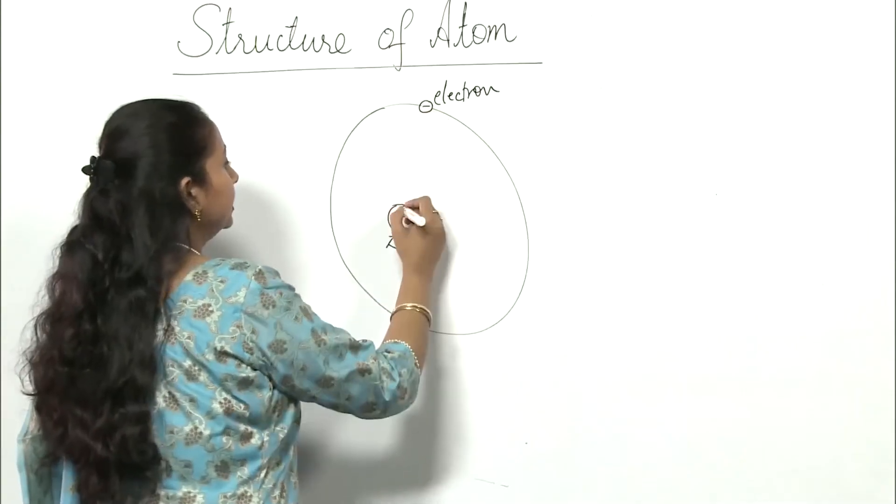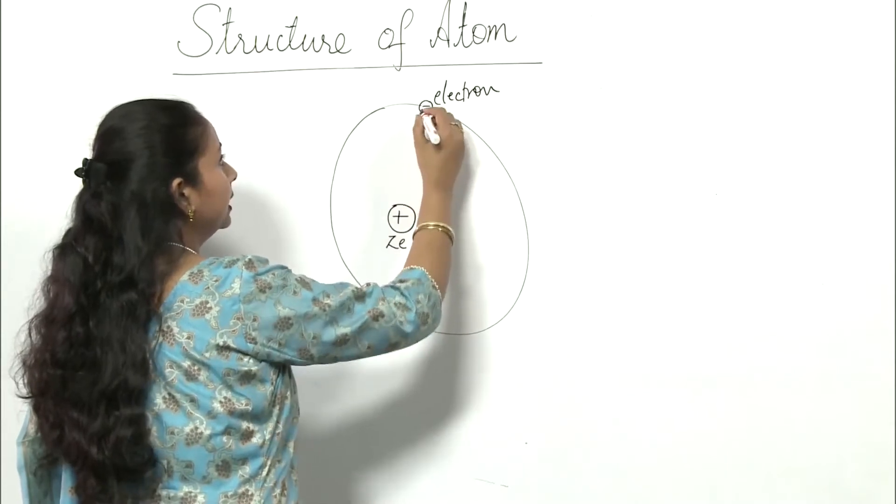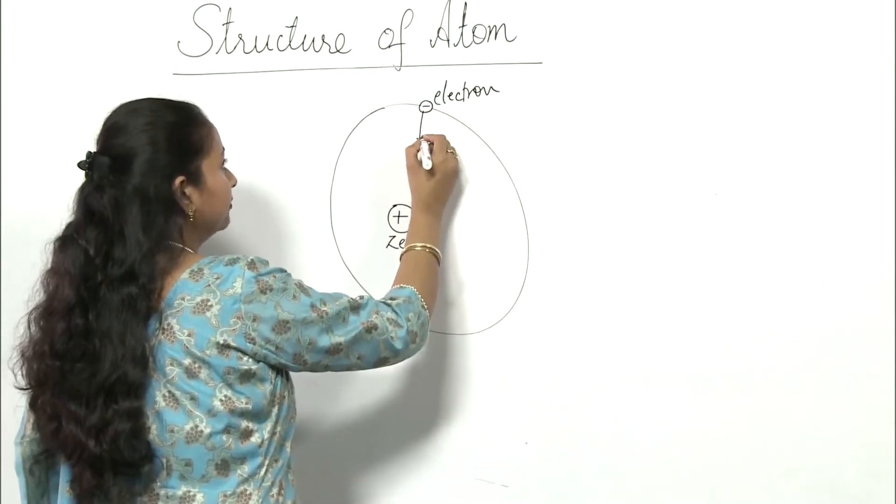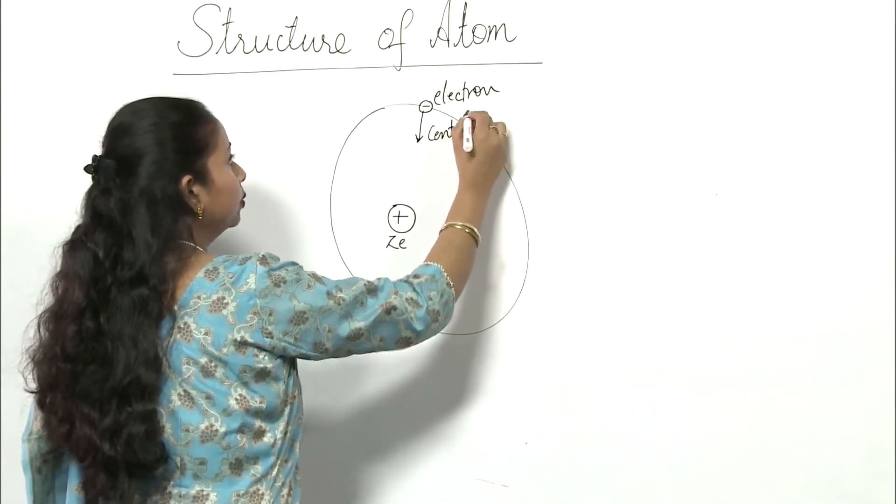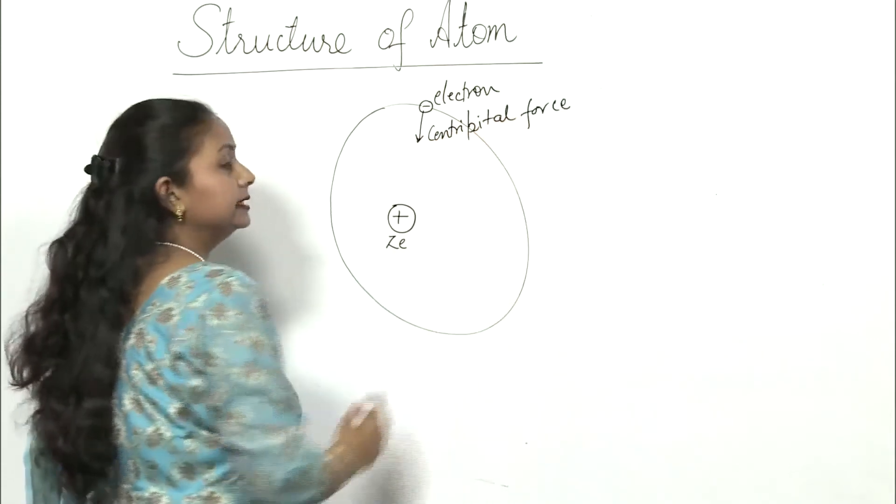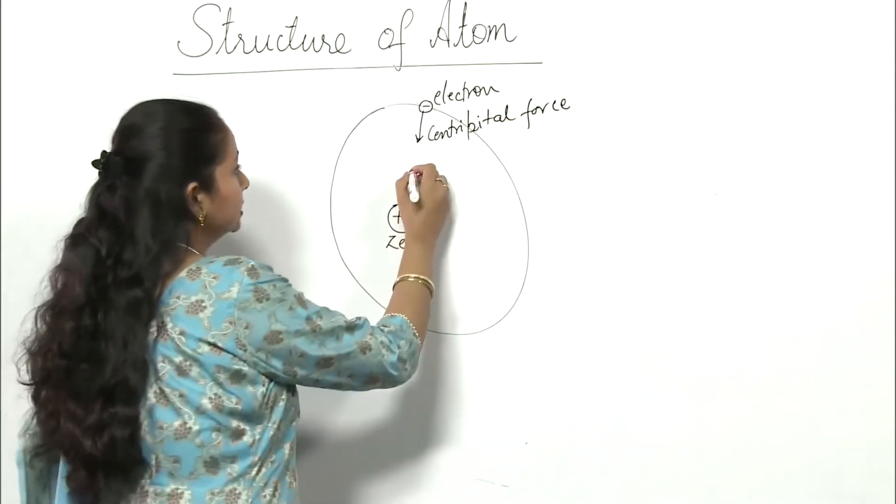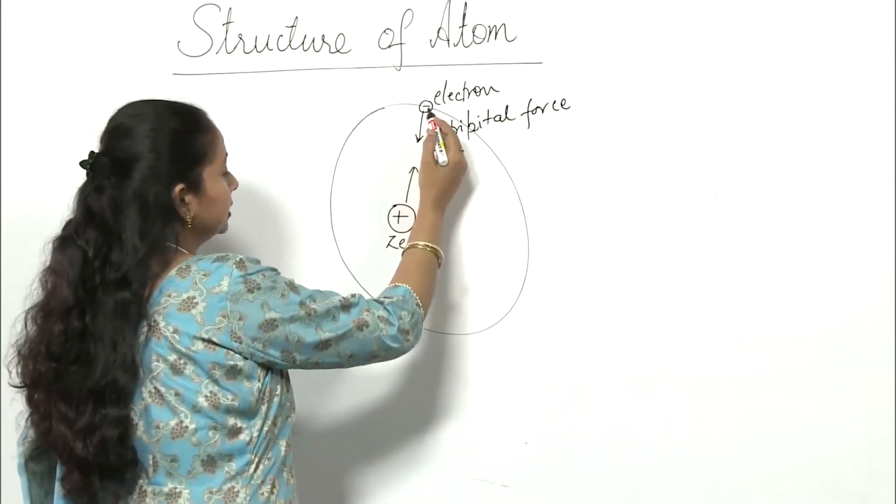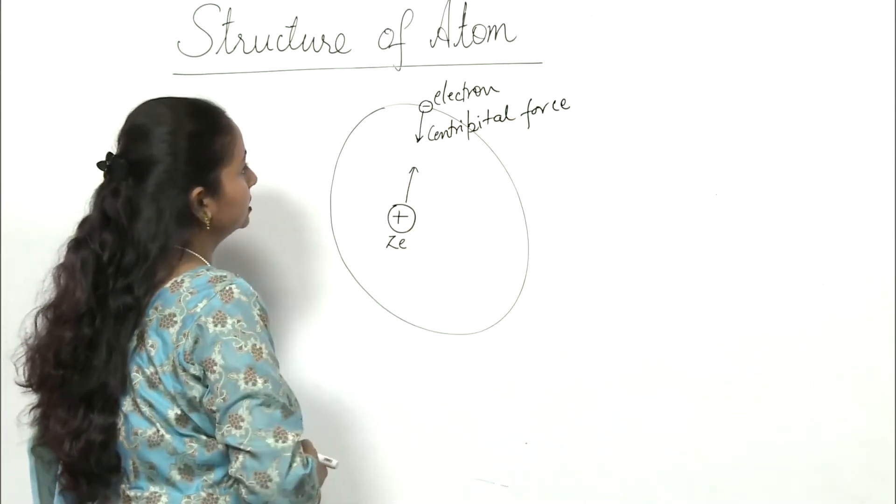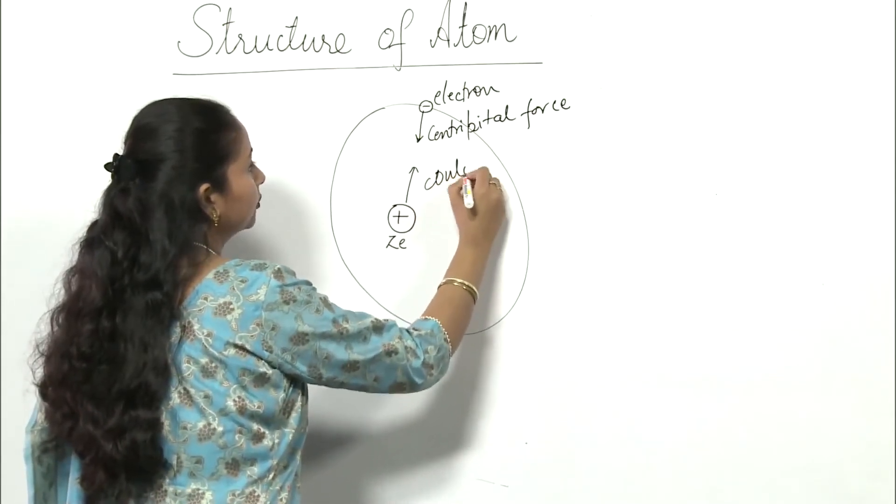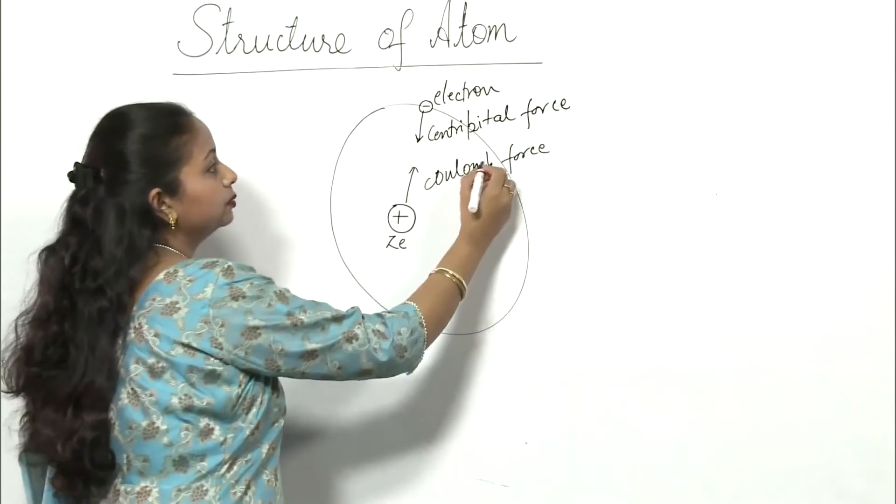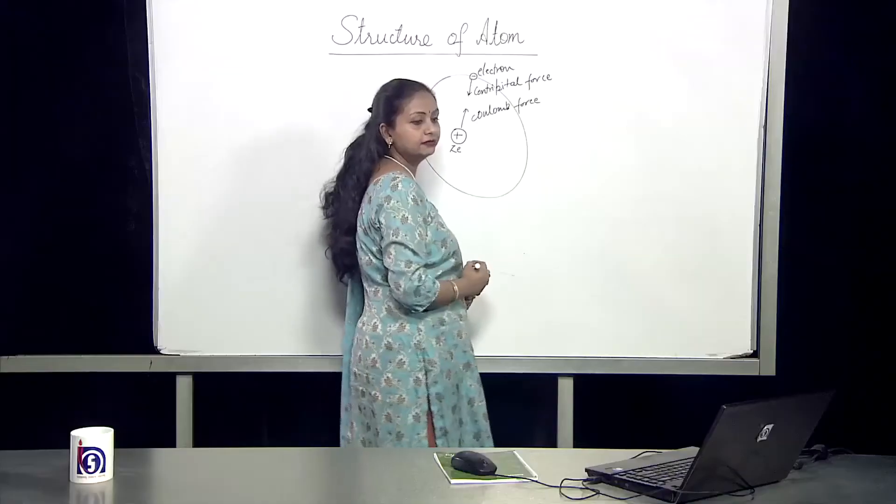Now, since the electron is revolving, it will have a centripetal force which is radially inward. And since these electron and the nuclei are positive and negative charges, there will be a Coulomb force. This force will be attractive in nature.